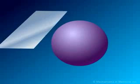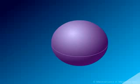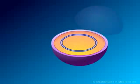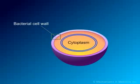Structurally, most bacteria consist of a cell membrane surrounded by a cell wall and, for some bacteria, an additional outer layer. Internal to the cell membrane is the cytoplasm which contains ribosomes, a nuclear region, and in some cases, granules and/or vesicles.